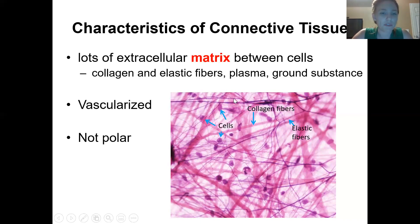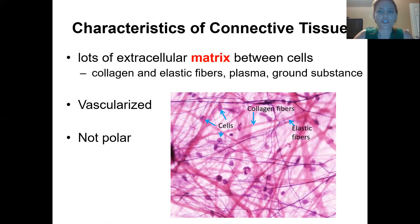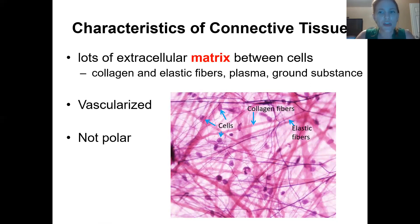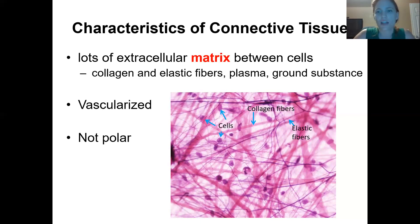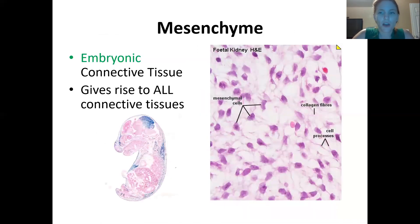Connective tissues are vascularized, meaning they have blood vessels, unlike epithelial tissues which are avascular. Blood vessels bring nutrients and oxygen that cells need. You'll notice a lot of connective tissues surround other tissue types to supply those nutrients. Connective tissue is also non-polar — there's no apical or basal surface. The biggest defining feature, though, is that abundance of extracellular matrix.